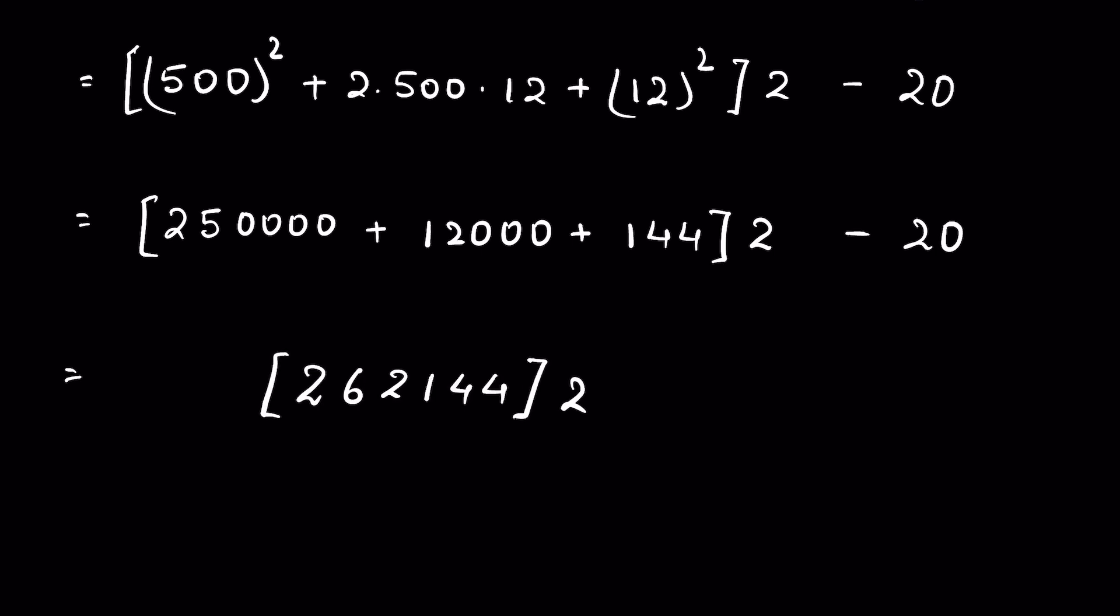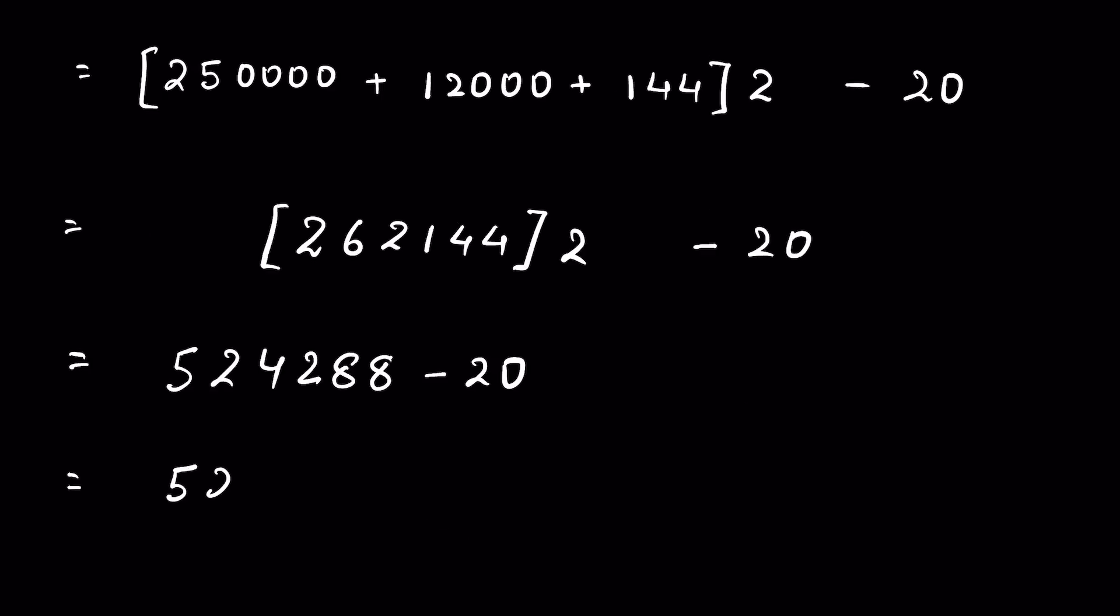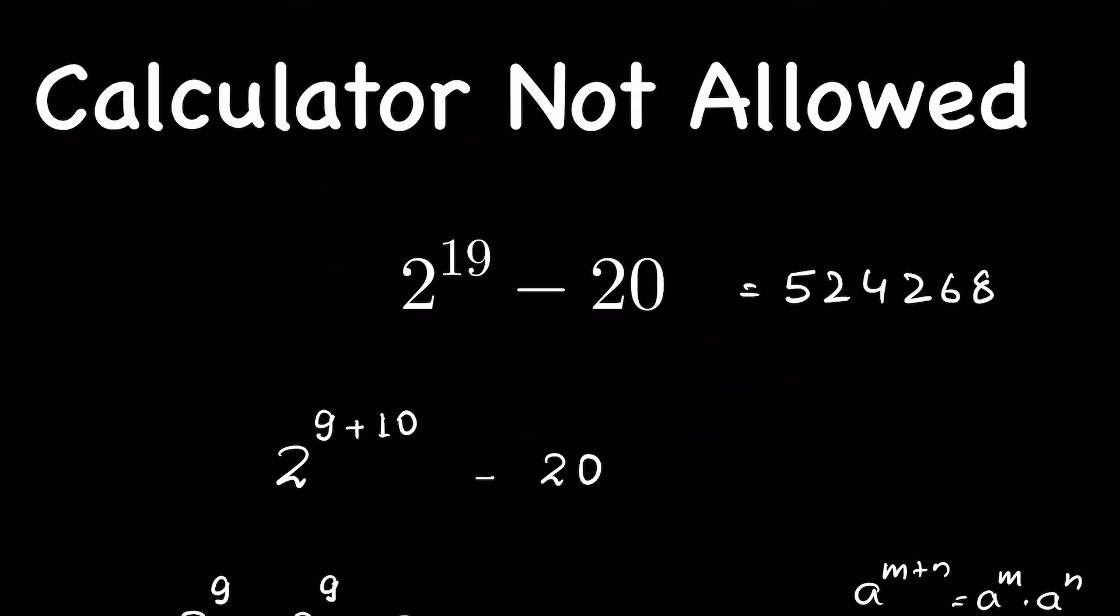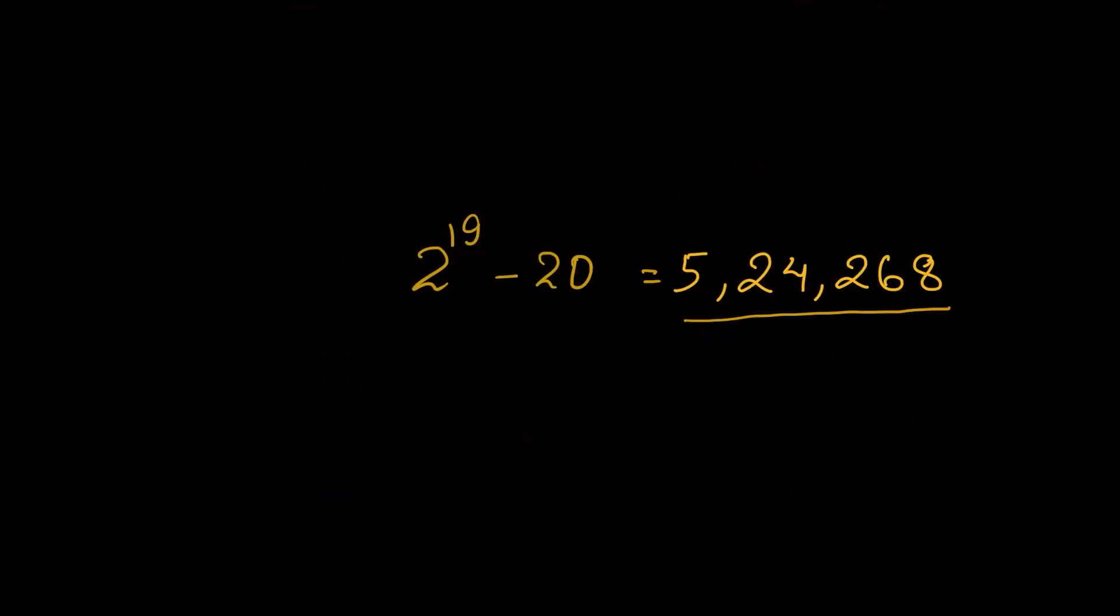Multiply it with 2, so we get 524,288. Now minus 20, so 524,268. This is our final answer. Let's check it in the calculator. Our answer is correct! How did you solve it? Let me know in the comment section. Thanks for watching.